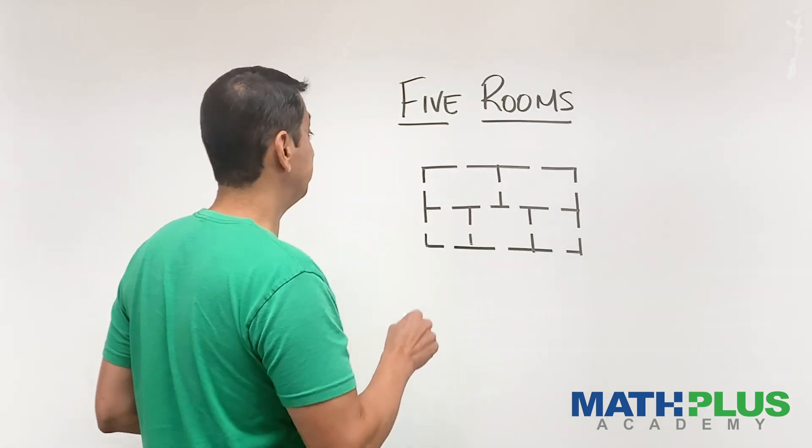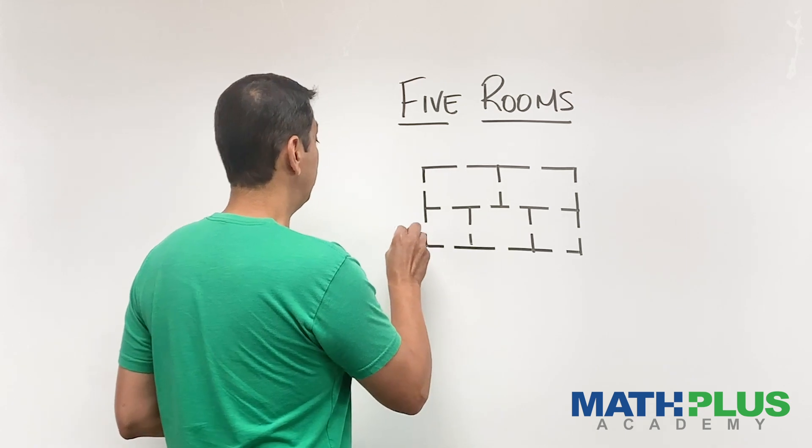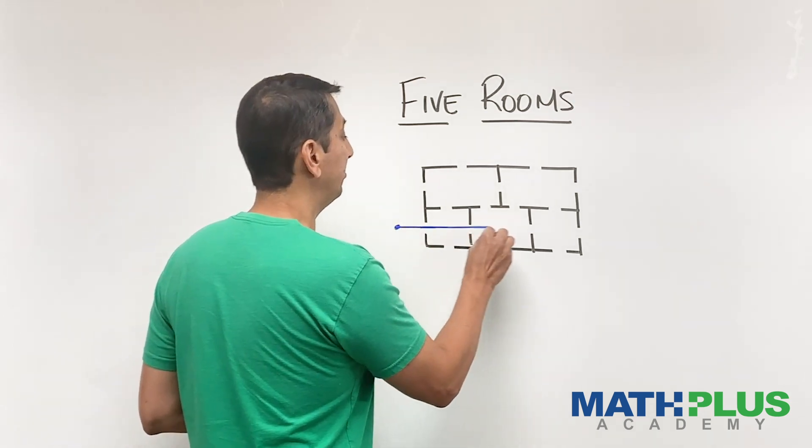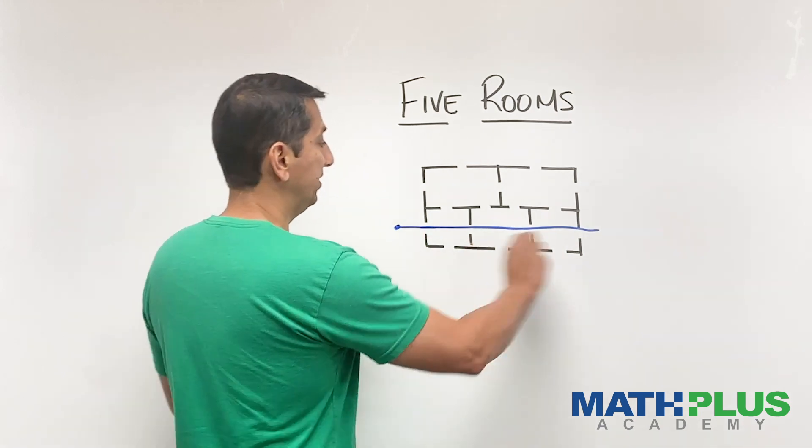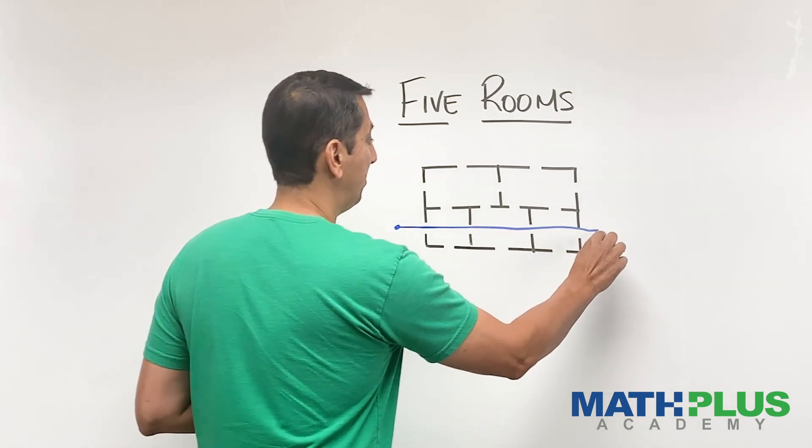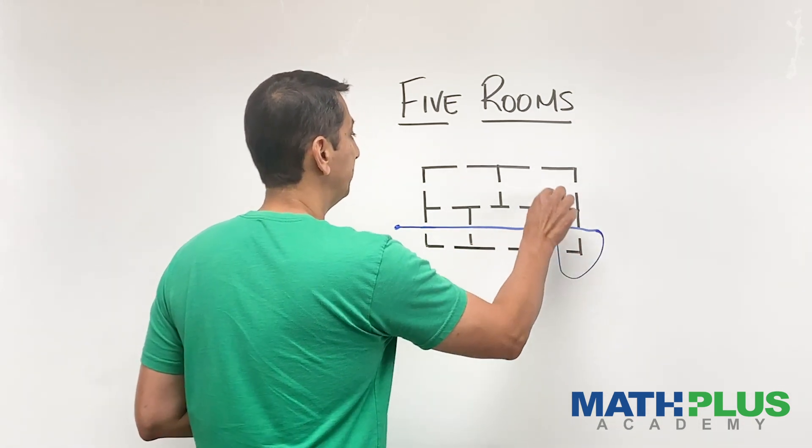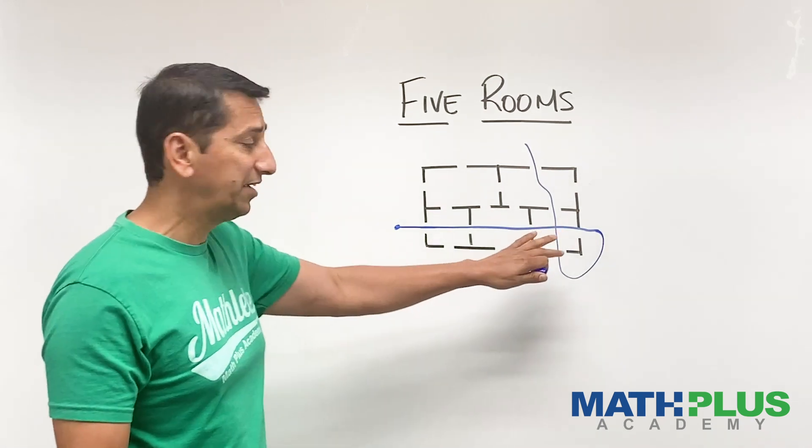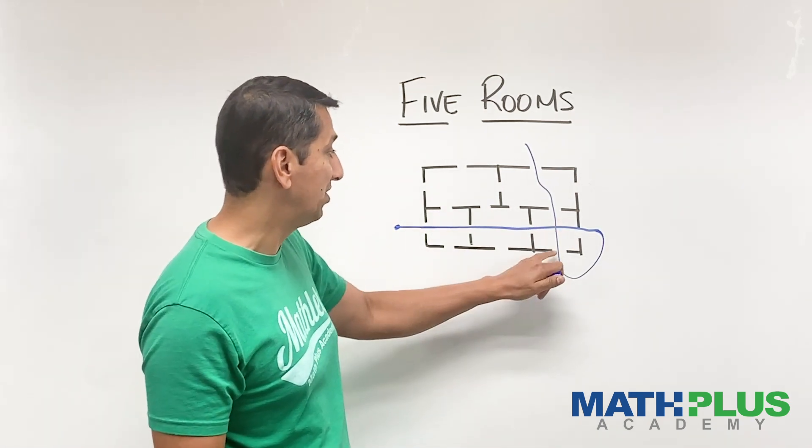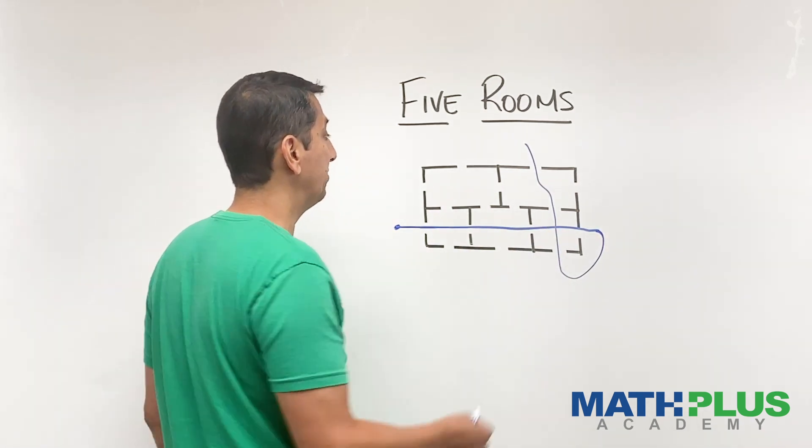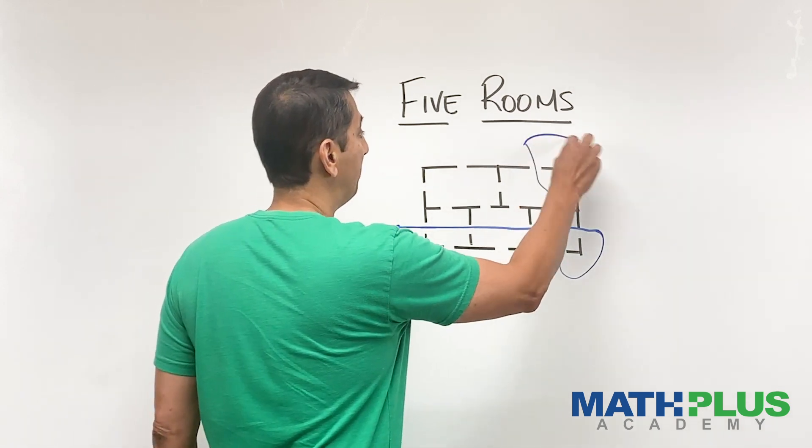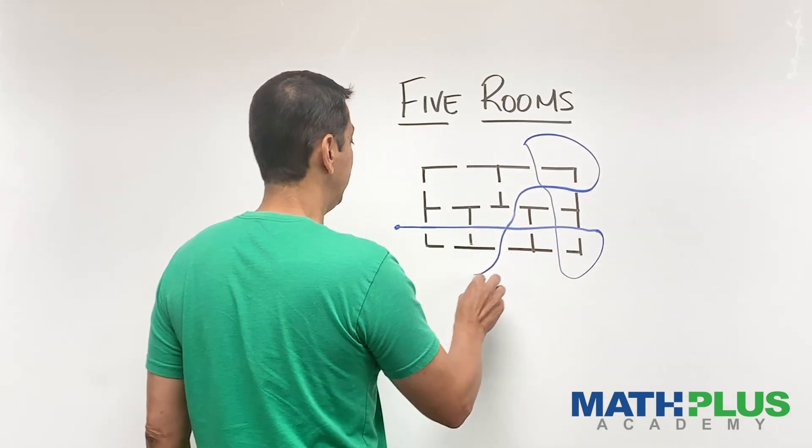So I might try something like this. Maybe I'll start over here, and I'll just go straight through and hit all four of those openings. And then I'll wrap around and come through like this. By the way, it's okay if I cross my own path. This problem is all about which openings do I go in and out of.